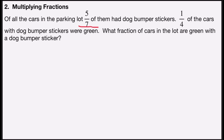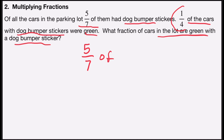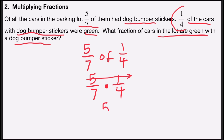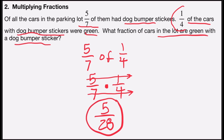Five-sevenths of the cars had dog bumper stickers — this is the part that tells you to multiply. One-fourth of the cars with bumper stickers are green. So we need to find five-sevenths of one-fourth, which means multiply five-sevenths times one-fourth. Five times one is five; seven times four is twenty-eight. Five over twenty-eight does not have a common factor, so five twenty-eighths of the cars in the lot are green with a dog bumper sticker.